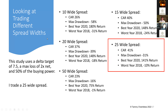Then we look at different spread widths using the same parameters: a delta target of 7.5, a two-times loss stop, and 50% of buying power. The tighter spreads have a lower compounded annual return. The 50-wide also had a lower compounded annual return, while the 15-wide was a little higher, 20-wide about the same, 25-wide a little better. The drawdown was higher on the lower spreads though — 58% max drawdown on the tightest, 50% max drawdown on the next.